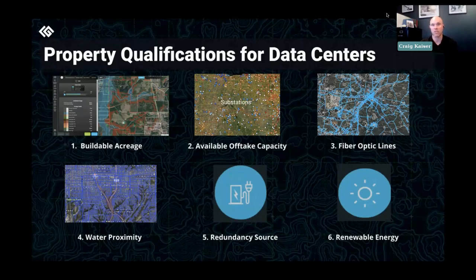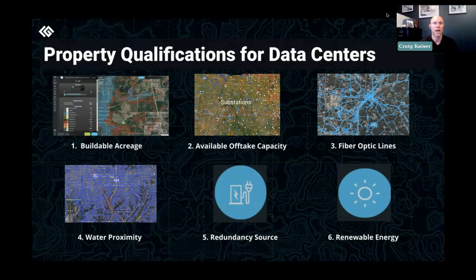Shifting gears slightly — when talking about solar energy, wind energy, or generating electrons, some substations have the ability to accept more electrons. It's essentially a very large wall outlet. Just as your wall outlets can be full of appliances, you can push and pull electrons through that outlet. Substations are no different — just orders of magnitude larger in the amount of electrons flowing through them.